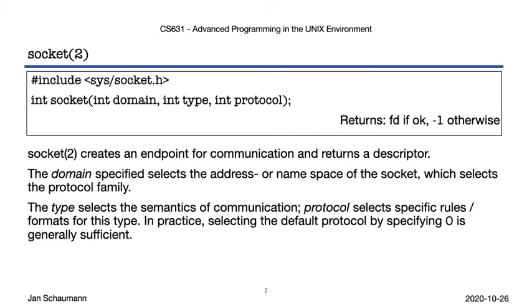In addition, sockets are typed based on how the user process interacts with the socket in the given domain. Finally, the user may choose a particular protocol — a set of rules that further governs the details of the communication. Usually, there's one protocol for each socket type, and in most cases it's sufficient for the user to simply let the kernel pick the appropriate default protocol for the selected socket domain and type. This is done by specifying zero for the protocol.